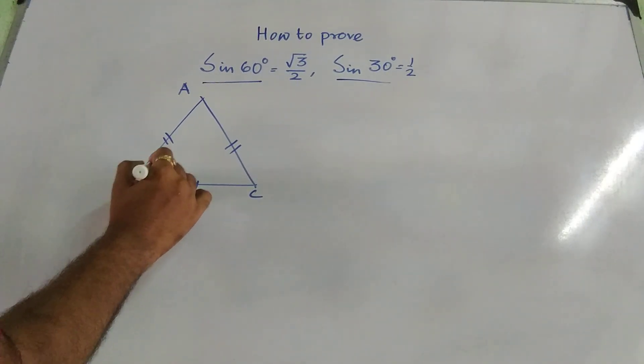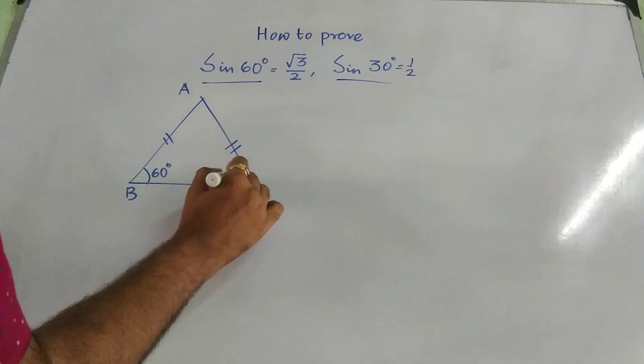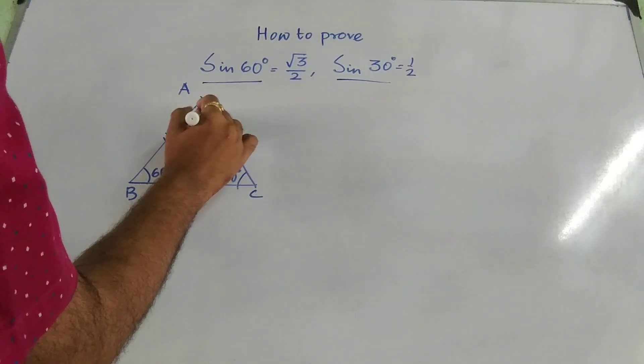At the same time, all the angles of an equilateral triangle are 60 degrees. So angle A, angle B, angle C, everything.